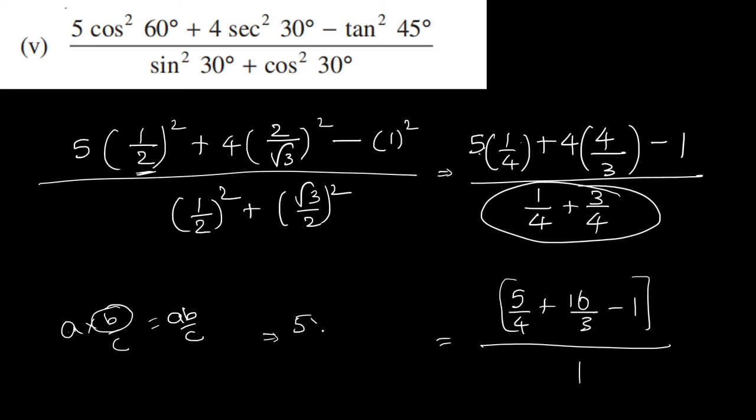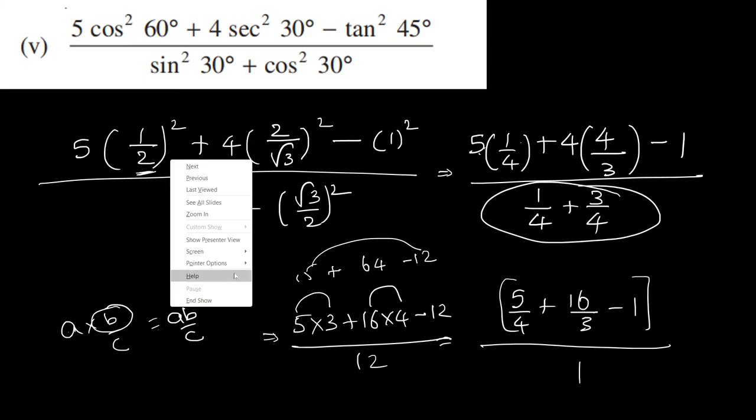5 into 3 plus 16 into 4 minus 12, by 12. So 5 times 3 is 15, 16 times 4 is 64, minus 12. 15 plus 64 minus 12 equals 67.